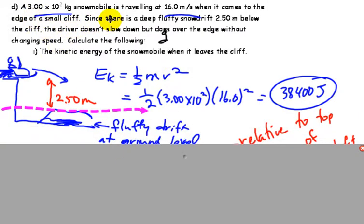A 300-kilogram snowmobile is traveling at 16 meters per second when it comes to the edge of a cliff. Since there's a deep, fluffy snow drift 2.5 meters below the cliff, the driver doesn't slow down but goes over the edge without changing speed. Calculate the following, the kinetic energy when he leaves the cliff.